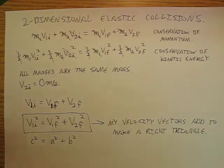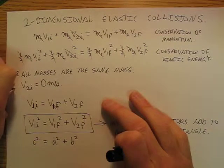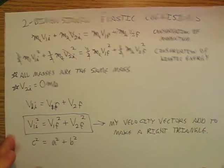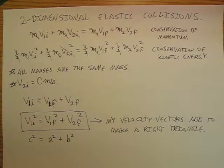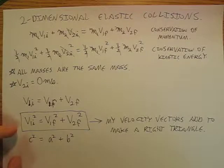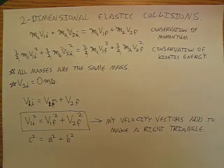Now remember, this is because of two really important simplifications. So we've simplified it with those two simplifications, and we get down to this idea that our velocity vectors are going to add to make a right triangle. If we don't have that simplification, life gets much more complicated.